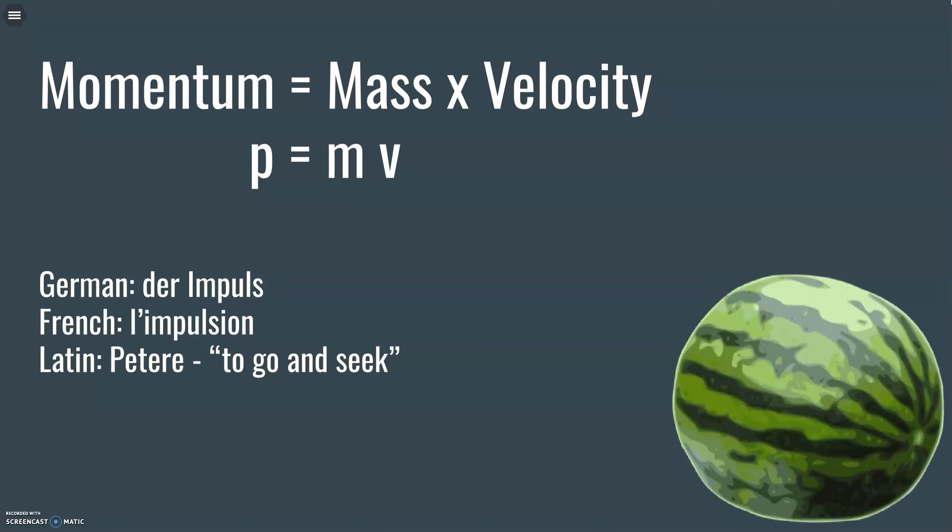In Germany, they call it der impuls. In French, it's l'impulsion. The Latin is pateri, which means to go and seek. So that type of motion, that movement. And there's arguments as to how this evolved when they first started dealing with momentum. And actually, when Newton first started dealing with this, he didn't even use the term momentum at the time. So later on, they had to deal with something.